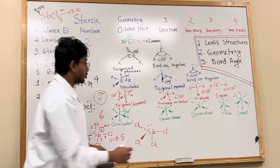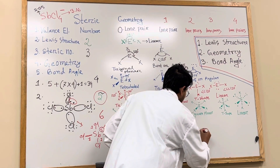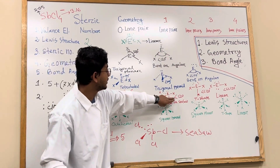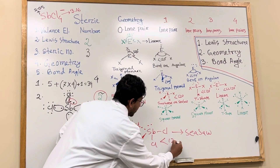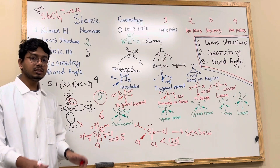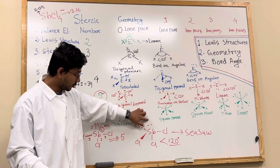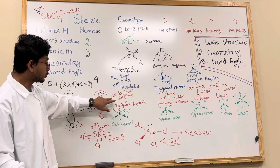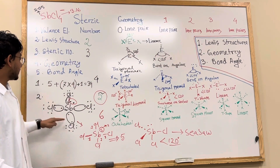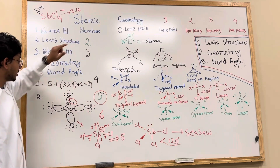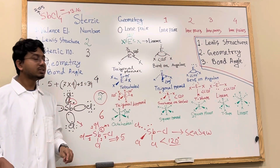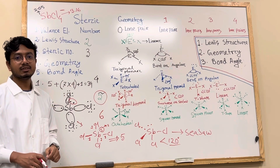This is our seesaw structure and this is the geometry. As for the bond angle, it will be less than 120 degrees because of the one lone pair of electrons. It should be 120 degrees, but because of the lone pair it is less than 120. So in this video we identified the Lewis structure of SbCl4⁻, found the geometry which is seesaw, found the bond angle, and saw the impact of the lone pair on the bond angle. Thank you.